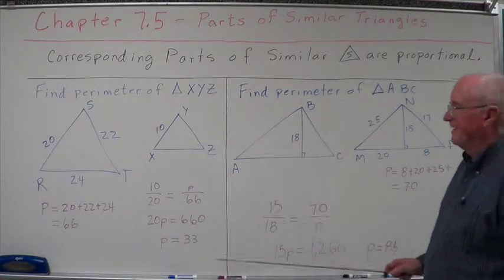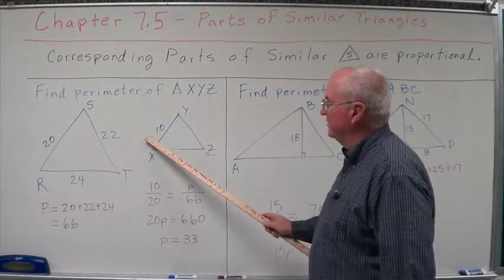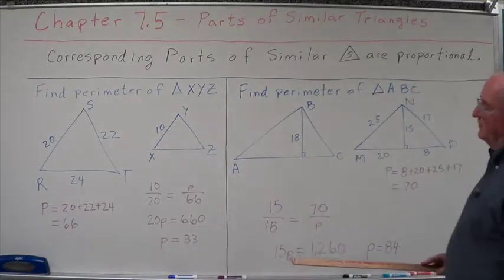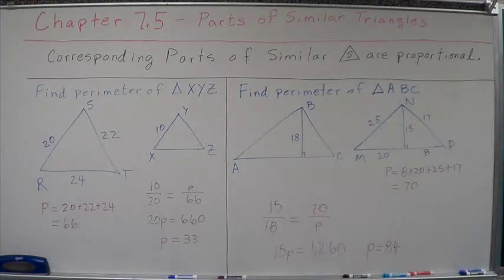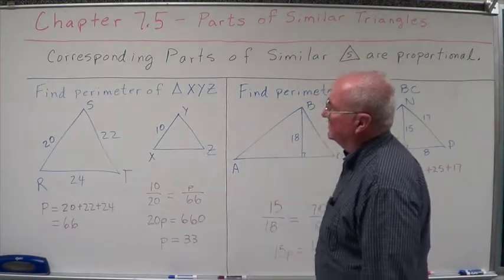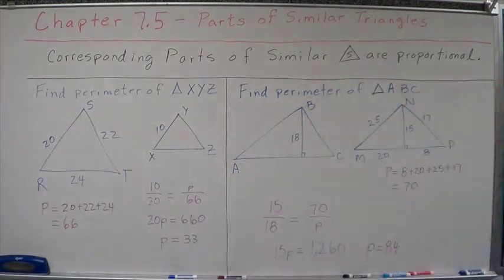And we would sort of think that would be true because this is half, so therefore this ought to be one half of the perimeter of that one. All right, so that's using a side, corresponding sides of similar triangles to set up our proportion.